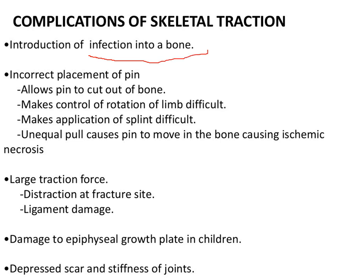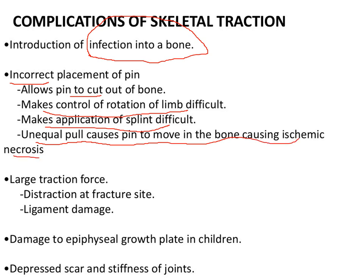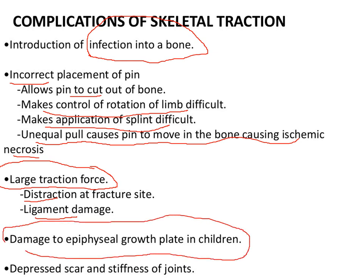Complications of skeletal traction: the most important is infection — if there is bone infection it is a very problematic condition for both surgeon and patient. There can be incorrect displacement of the pin leading to cutting out, difficulty controlling rotation of the limb, and unequal pull causing pin movement and ischemic necrosis. Excessive force can cause distraction of the fracture site and ligament damage. In children, damage to the epiphyseal growth plate can lead to varus-valgus or rotational deformity, shortening, or overgrowth. Other complications include depressed scars and joint stiffness. This completes our lecture for today.